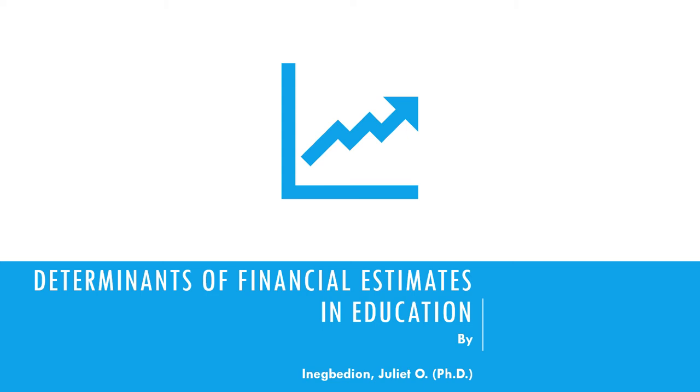Let's look at the determinants of financial estimates in education. In every sector, there are certain factors that determine the financial estimates, so education is not exclusive. First is the educational objectives. Though they cannot be quantitatively measured, they are a major factor in estimating financial expenditure in education. They guide the planner to identify the priority area during appropriation. If you don't have the educational objective, you will not know what you need to look out for when planning for a particular year.